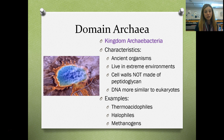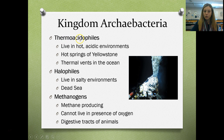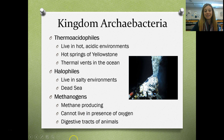Examples of archaebacteria include thermoacidophiles, halophiles, and methanogens — types that live in certain extreme environments. Thermoacidophiles — thermo meaning hot, acido referring to acidic — live in hot acidic environments like the hot springs of Yellowstone or thermal vents at the bottom of the ocean. Halophiles live in really salty environments like the Dead Sea. Methanogens are methane-producing archaebacteria that are anaerobic, meaning they cannot live in the presence of oxygen, and they live in places like the digestive tracts of animals.